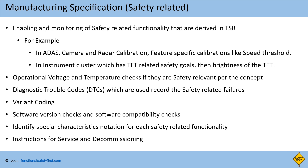Second example: in an instrument cluster which has TFT-related safety goals, the brightness of the TFT — too high or too low — will impact the driver's ability to understand notifications while driving. The manufacturing specification needs to ensure the calibration of TFT brightness is correctly performed. Requirements for threshold values for operational voltage and temperature, and steps to verify the same, are added if these are safety relevant as per the concept. Requirements for diagnostic trouble codes (DTCs), which are used to record safety related failures, are to be added. This will be used during field monitoring for safety related functionality. Then variant coding for the safety related features.